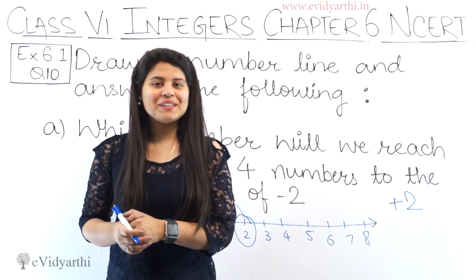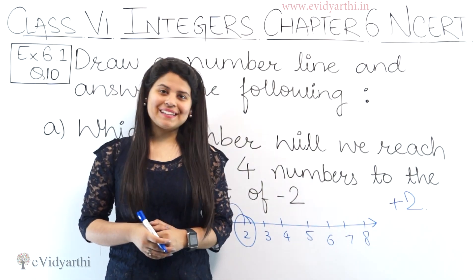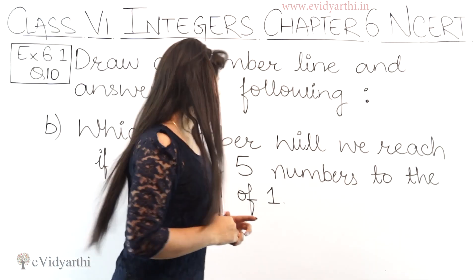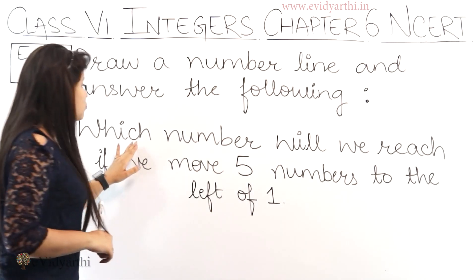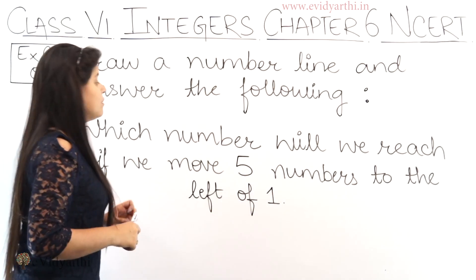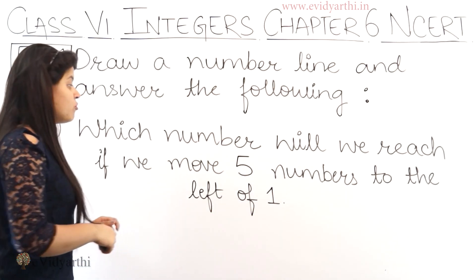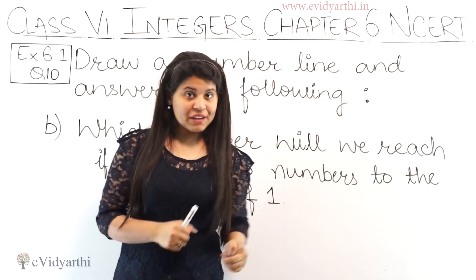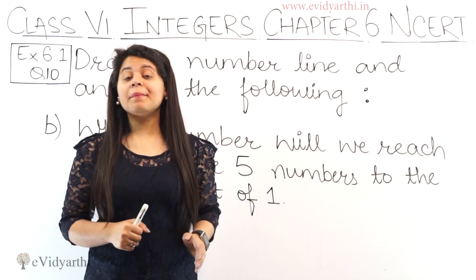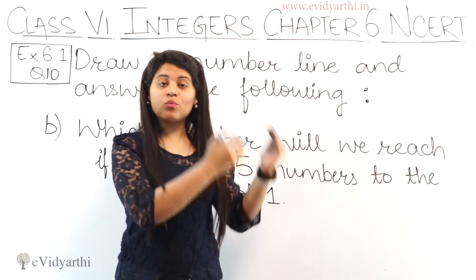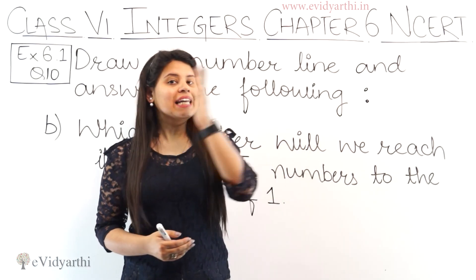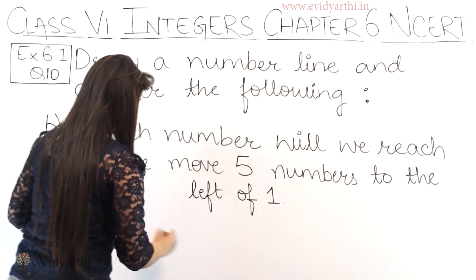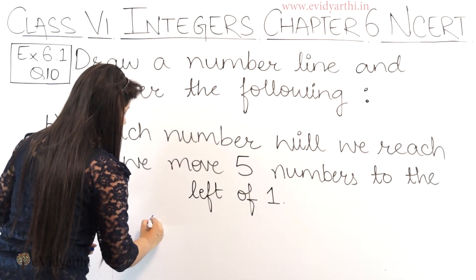Now it has come to the next part. Coming to part B: which number will we reach if we move 5 numbers to the left of 1? Now we have to move 5 steps to the left side of 1. So first let's draw the number line.